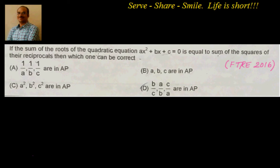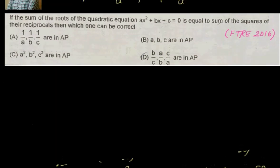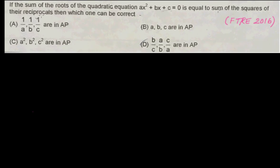First we write down the relations between the coefficients and roots of the quadratic equation. For ax² + bx + c = 0 with roots α and β, we know that α + β = −b/a and α·β = c/a.